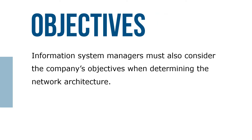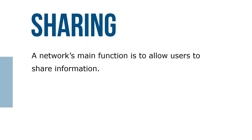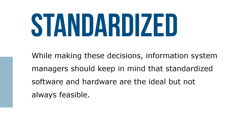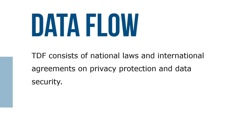Information system managers must also consider the company's objectives when determining network architecture. The network's main function is to allow users to share information. Managers should keep in mind that standardized software and hardware are ideal but not always feasible — using the same software in other countries becomes more complicated because of differences in language and business methods.